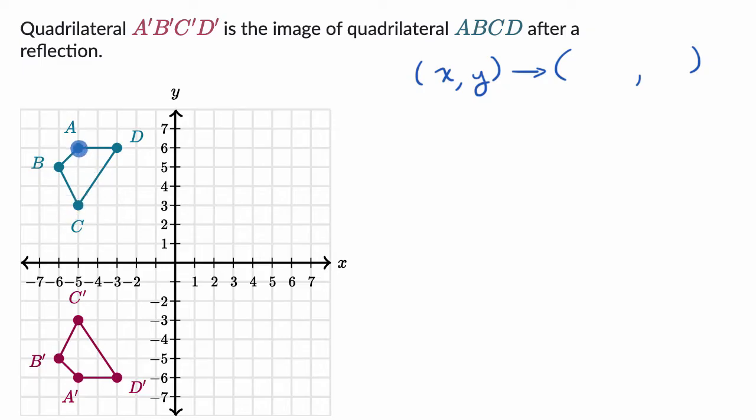We could just think about each of these points, for example point A, and then what happens when it goes to A prime and see if we can come up with a rule that works for all of them. So for example, point A is at the point negative five comma six.